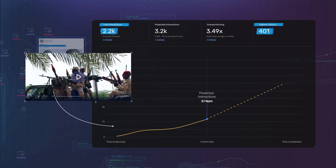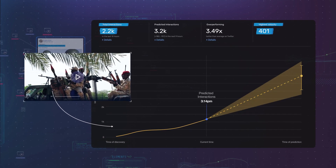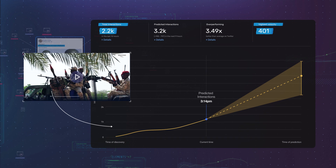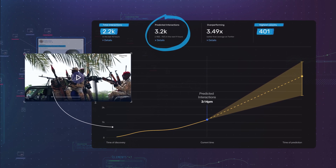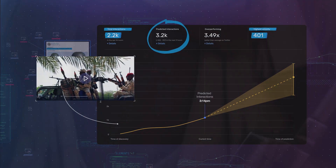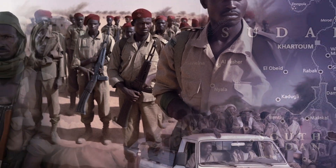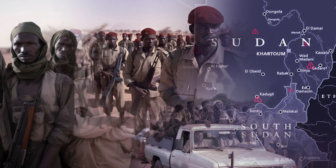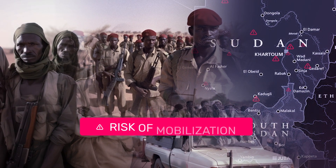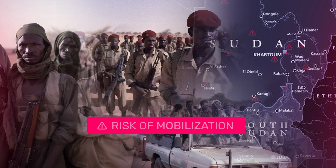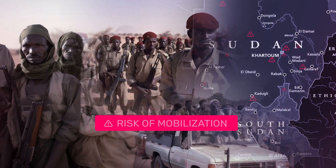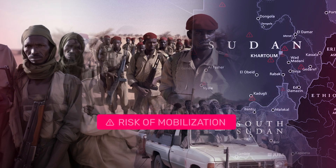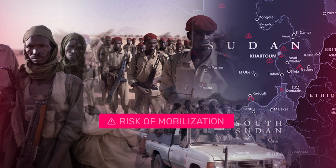Using Newswhip's predictive intelligence, they could see that the post was predicted to go viral in the hours ahead. This was a genuine risk that could trigger the Sudanese army and other factions into mobilization, and that a fiction could become a reality.